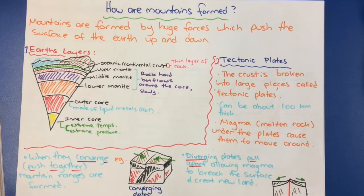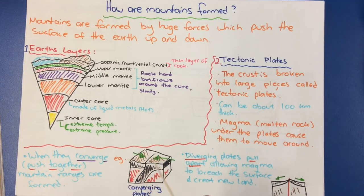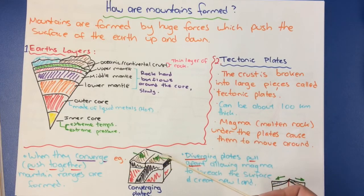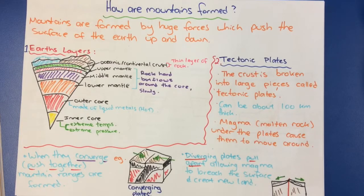When those plates move, they can converge or push together, which forms mountain ranges. The black represents the two plates, and the green represents the movement of those plates. As those two plates come together, one of them sinks beneath the other and the other one pushes up, creating a mountain ridge. If we look at another type of movement called diverging plates, that's where the plates pull apart, allowing the magma to breach the surface and create new land. The red represents the magma, which is allowed to breach the surface as the plates diverge or move apart.